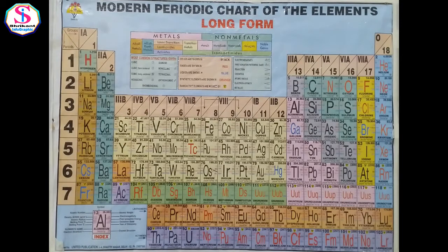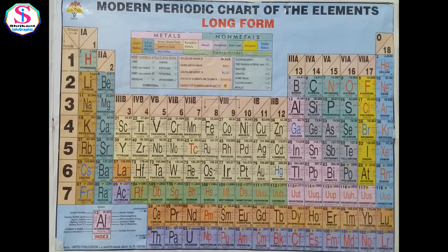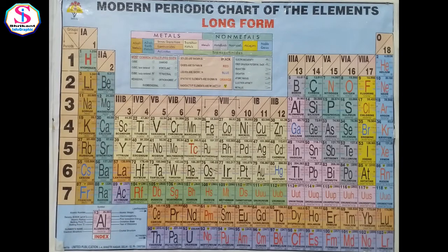The first period is the shortest, containing only hydrogen and helium — just two elements. Periods two and three are short periods with only eight elements each. Periods four and five are long periods with 18 elements each. The sixth period is the longest with 32 elements, and the seventh period is considered incomplete as some elements are still being discovered.